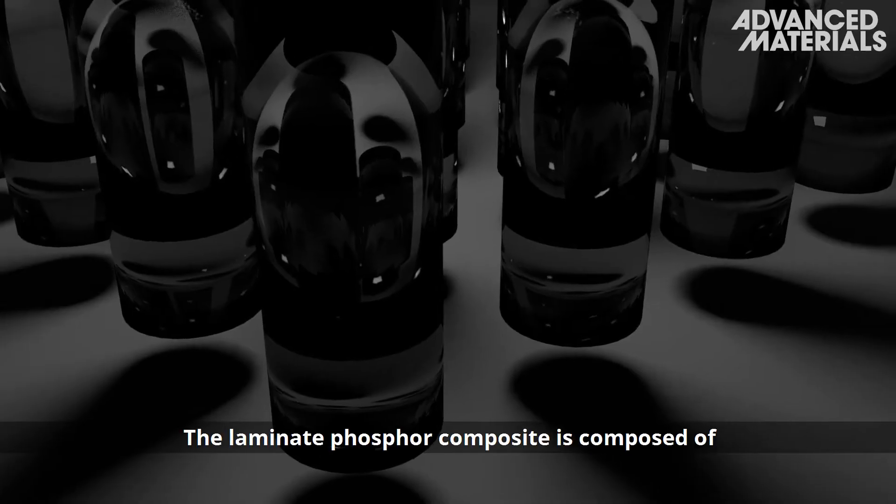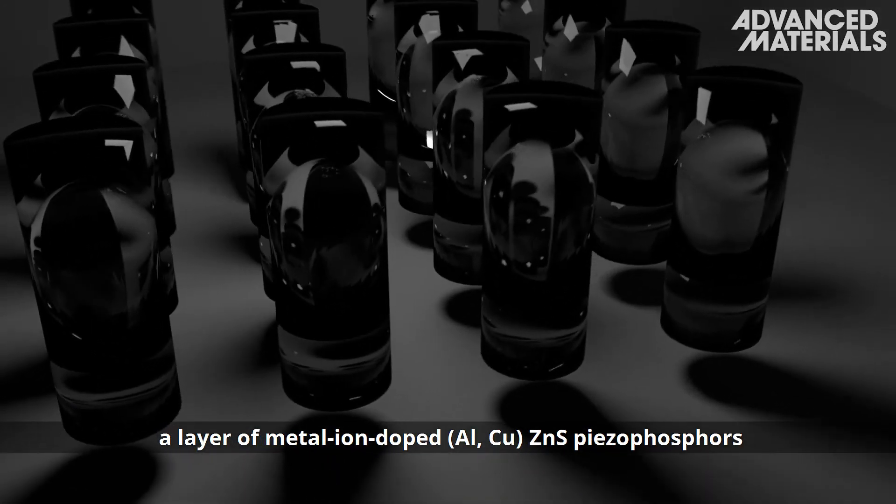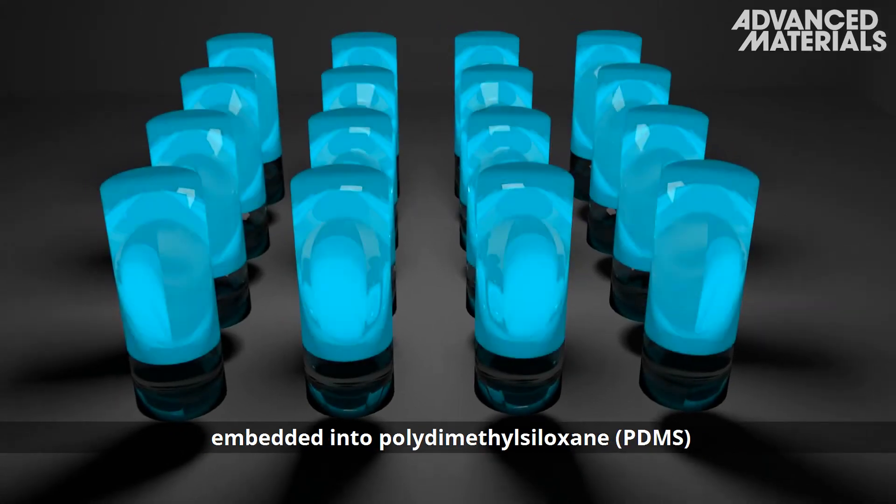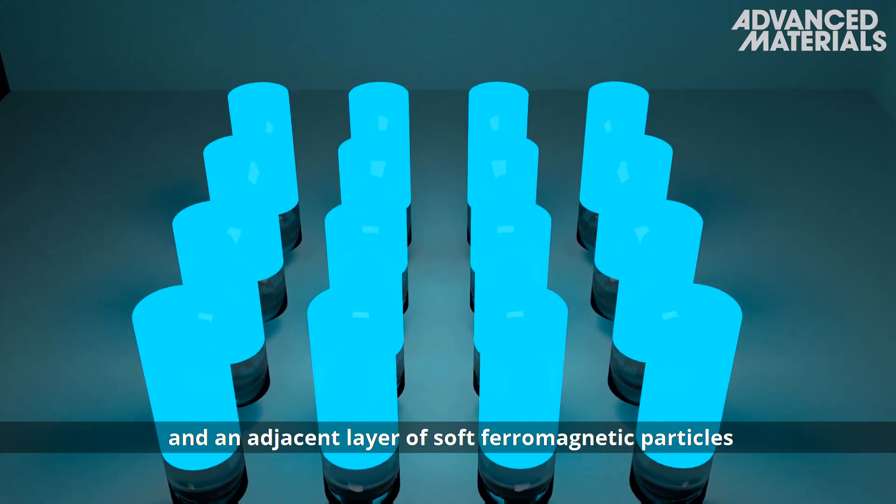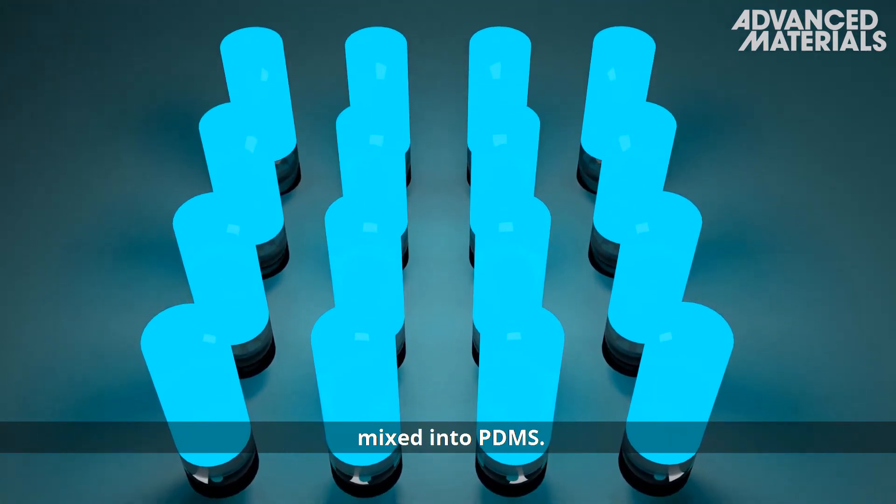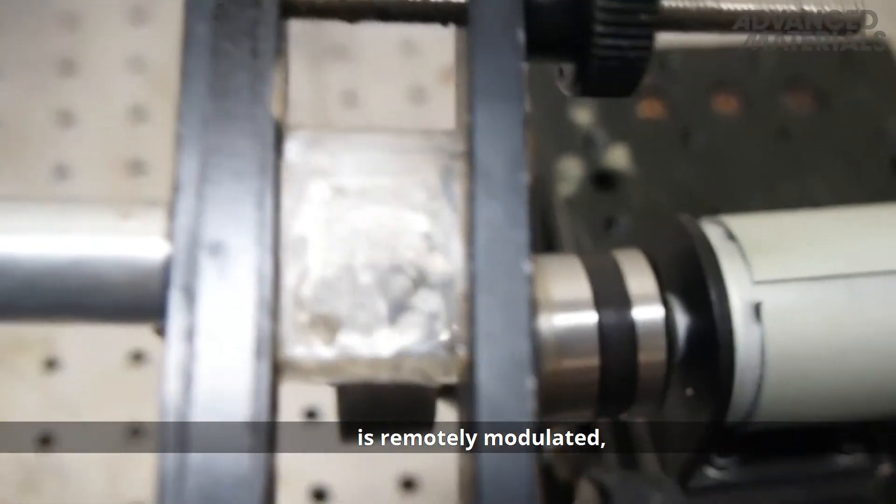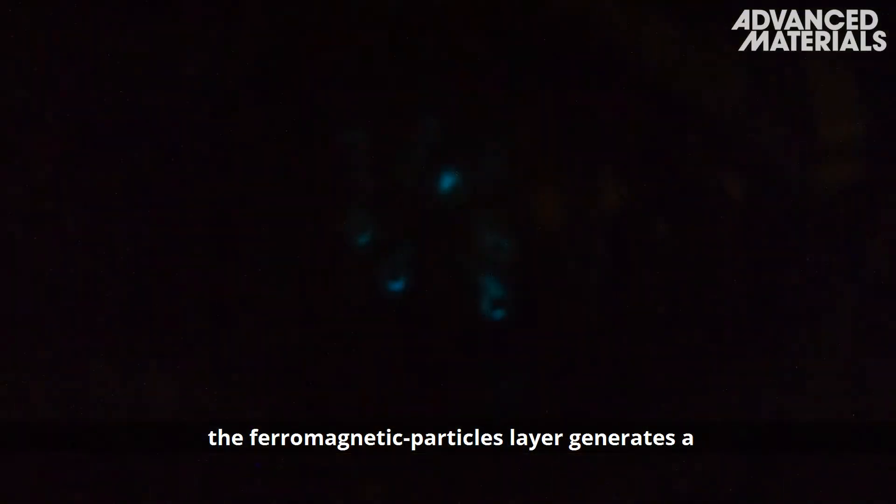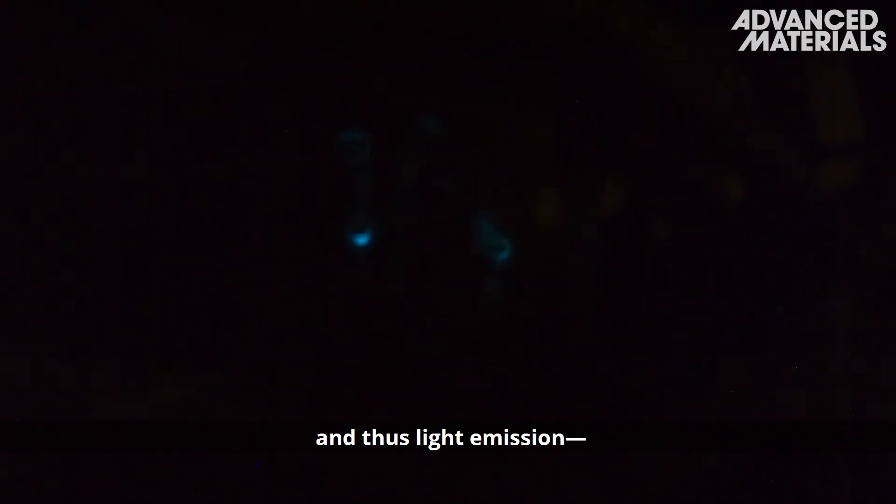The laminate phosphor composite is composed of a layer of metal ion-doped zinc sulfide piezophosphors embedded into polydimethylsiloxane (PDMS), and an adjacent layer of soft ferromagnetic particles mixed into PDMS. When the frequency of a low magnetic field is remotely modulated, the ferromagnetic particles layer generates a magnetostrictive strain that induces a piezophotonic effect, and thus light emission, in the neighboring piezophosphor layer.